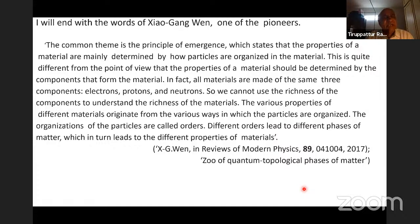I will end with the words of Xiao-Gang Wen, who is one of the pioneers in this field. The common theme is the principle of emergence which states that the properties of materials are mostly determined by how the particles are organized in the material. This is different from the point of view that the properties of material should be determined by the components that form the material. In fact, all materials are made of the same components, electrons, protons and neutrons. We cannot use richness of components to understand the richness of the materials. The various properties of different materials originate from the various ways in which the particles are organized. These organizations are called orders. Different orders lead to different properties of matter, which in turn lead to different kinds of quantum matter.